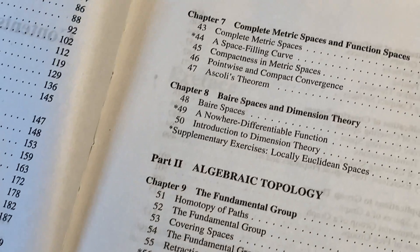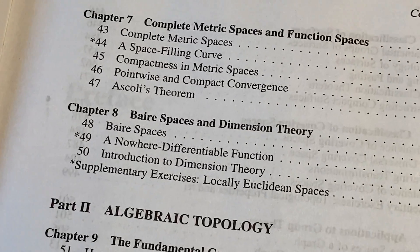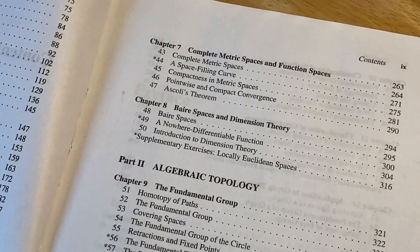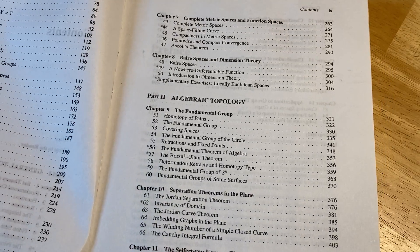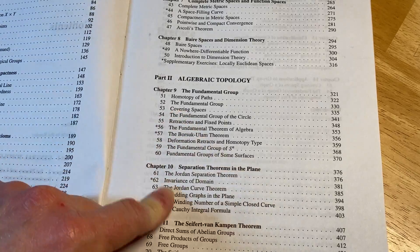metrization theorems and paracompactness, complete metric spaces and function spaces, Baire spaces and dimension theory. And then part two is on algebraic topology. That's right. It actually has a little introduction here. It talks about the fundamental group and stuff.